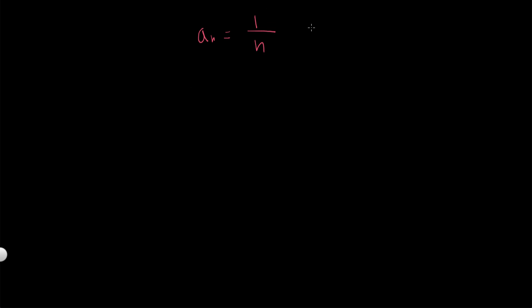So the first term, for example, would be a_1, which is equal to 1 over 1, which is 1. a_2 would be 1 over 2, which is 1 half. a_3 would be 1 third. a_4 would be 1 fourth, et cetera. So this is the series.